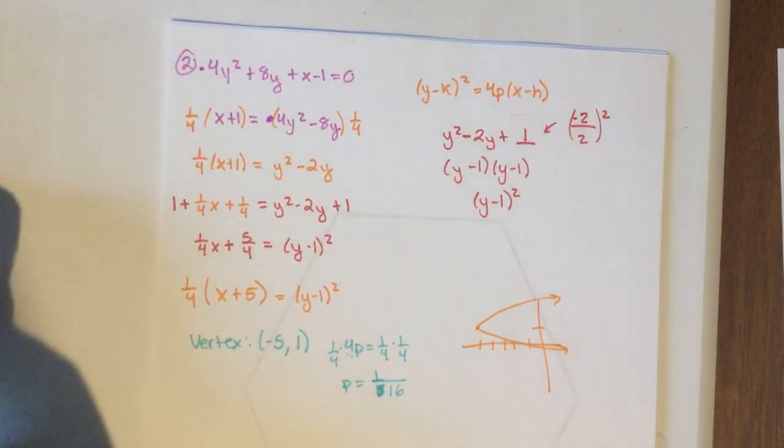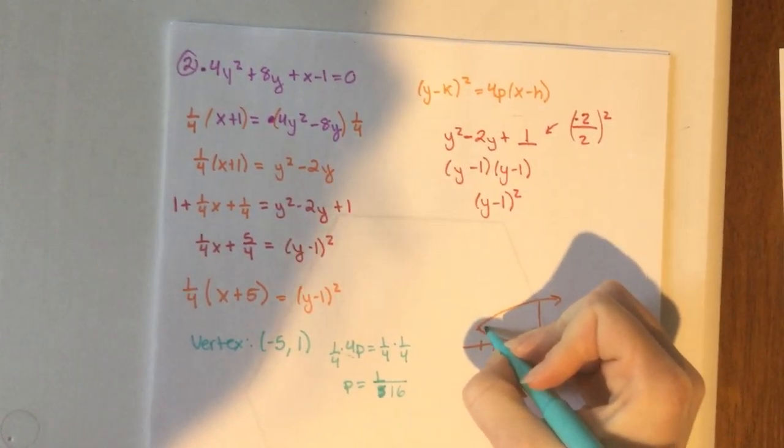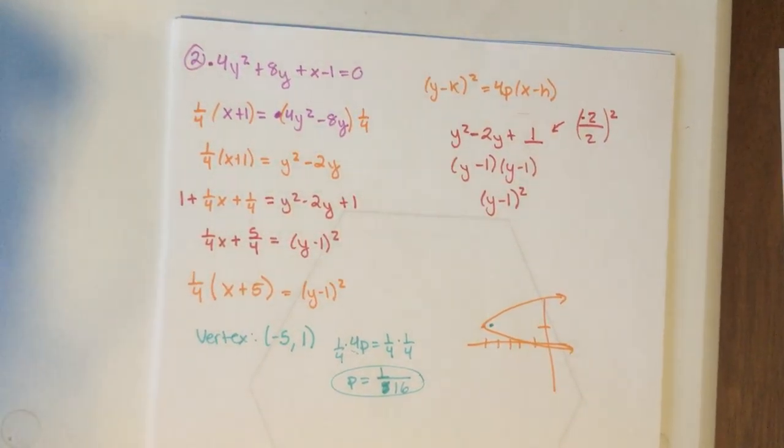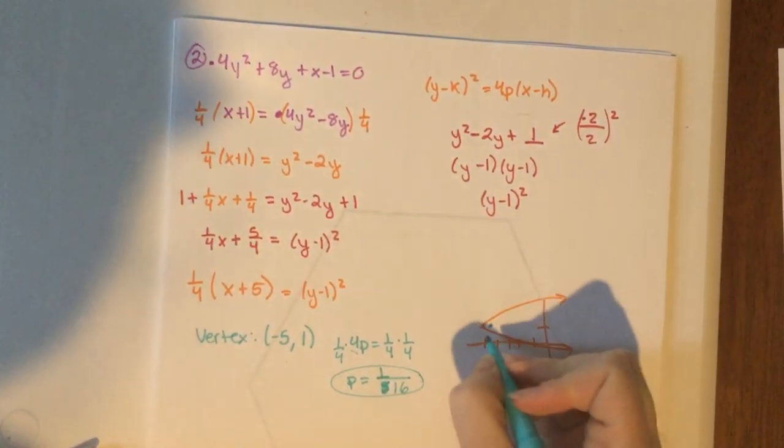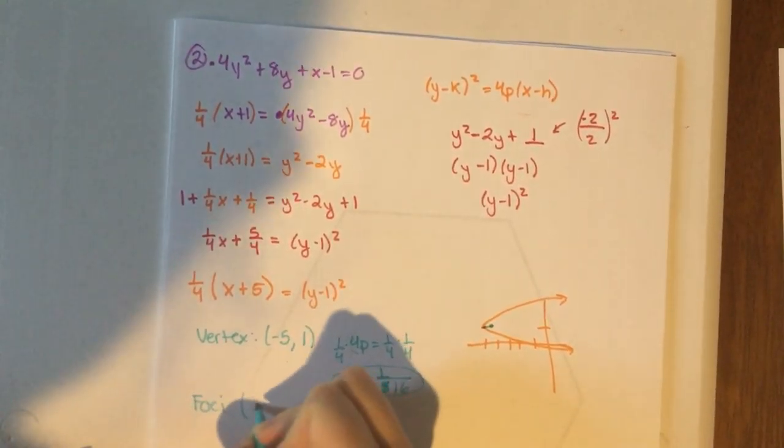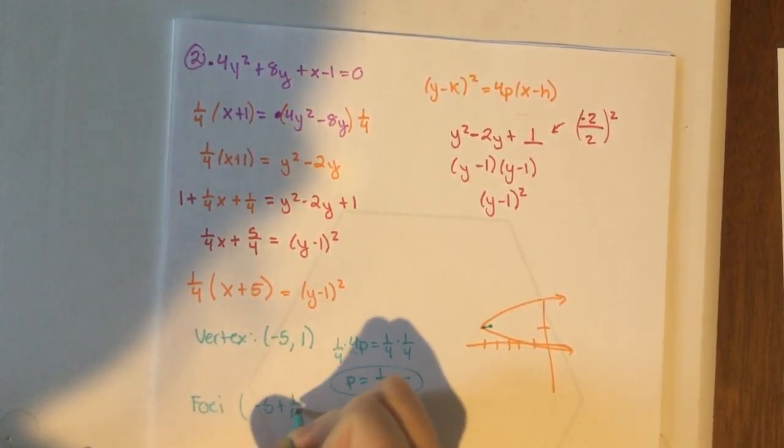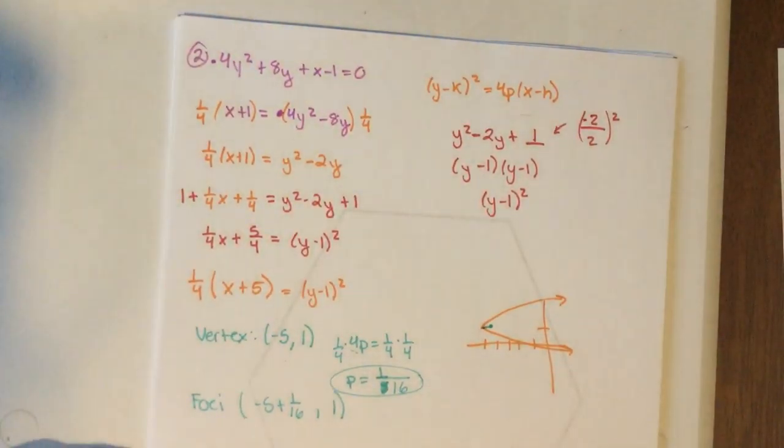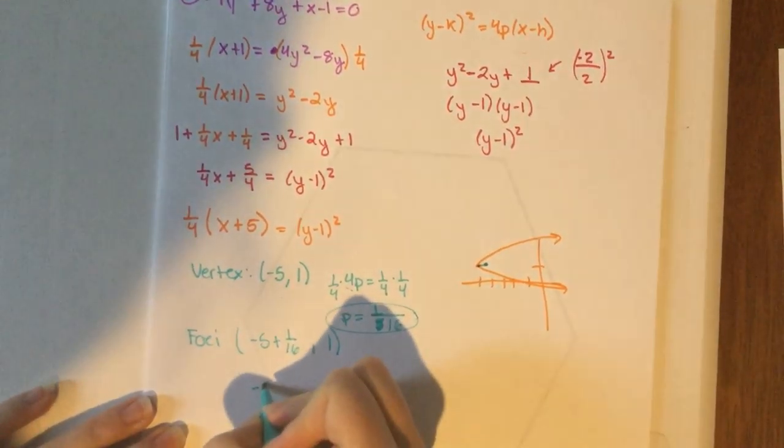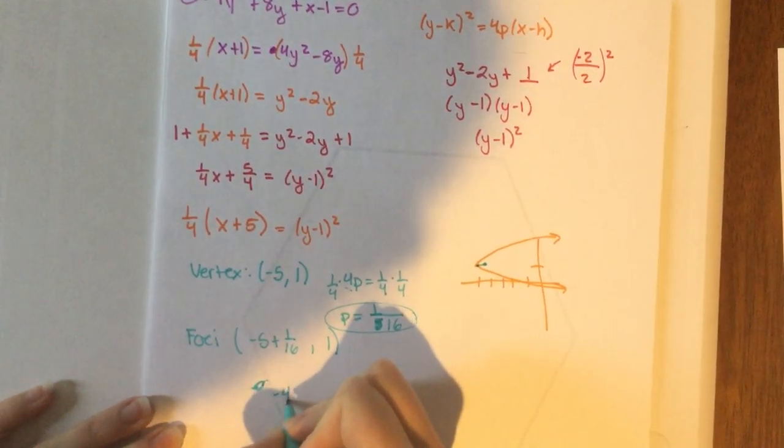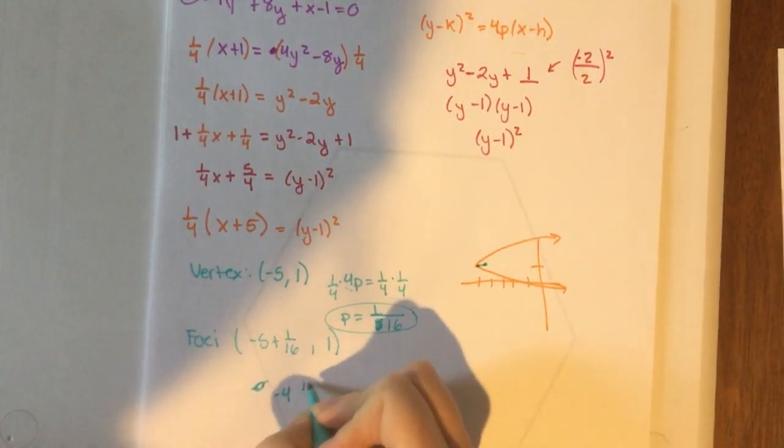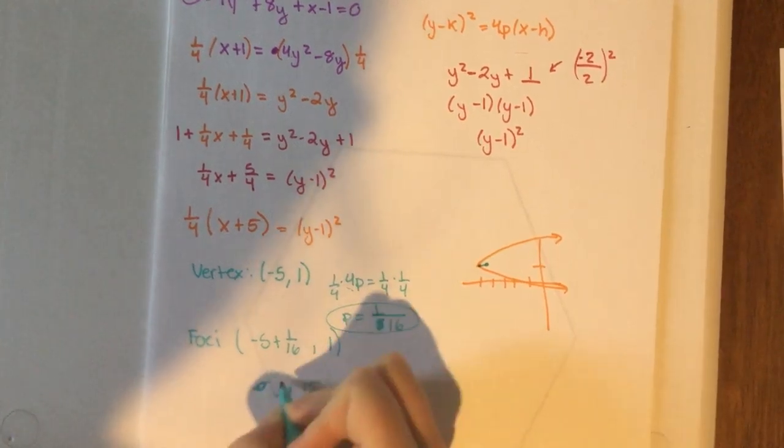So I know my focus in this is going to be right in that mess, and it is 1 16th away from the vertex. But it's 1 16th away to the right. So to get my foci, I will just take negative 5 and add a 16th, comma 1. So negative 5 plus a 16th, you could just write that as negative 4, and let's see, we would be at 15 16ths, positive 1.